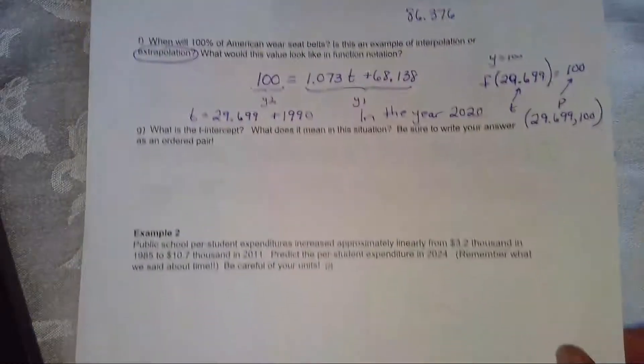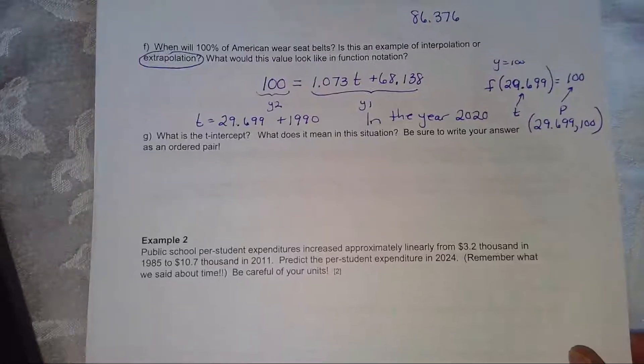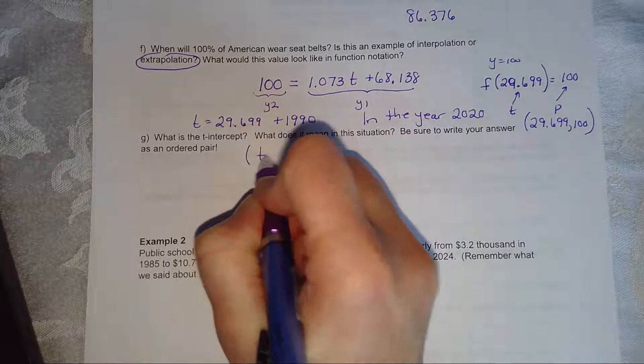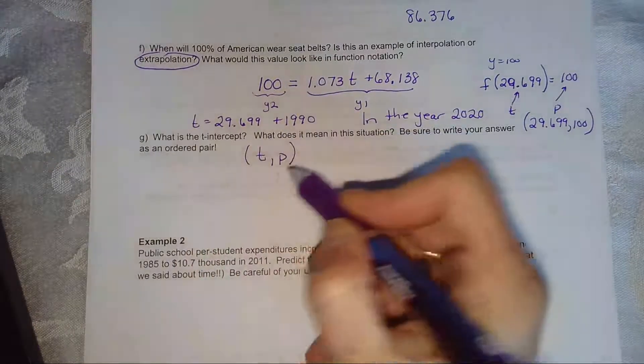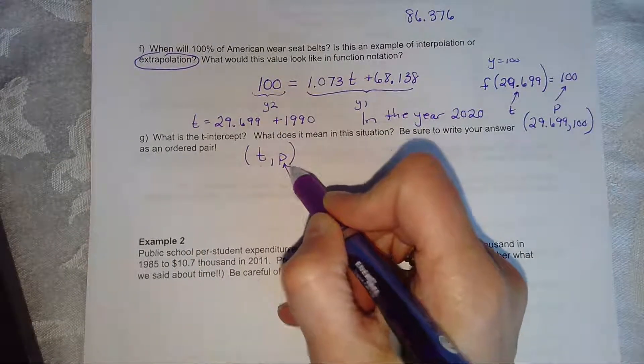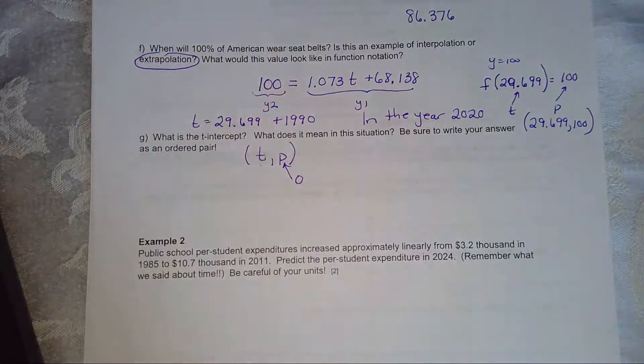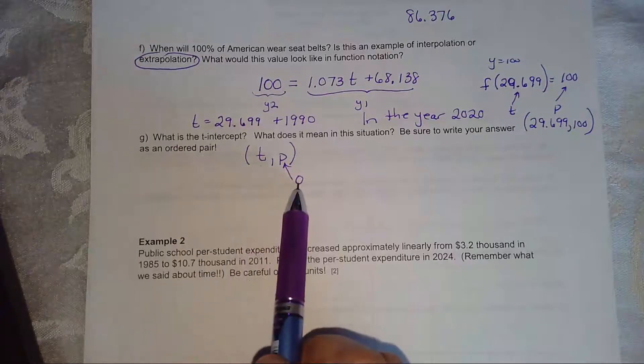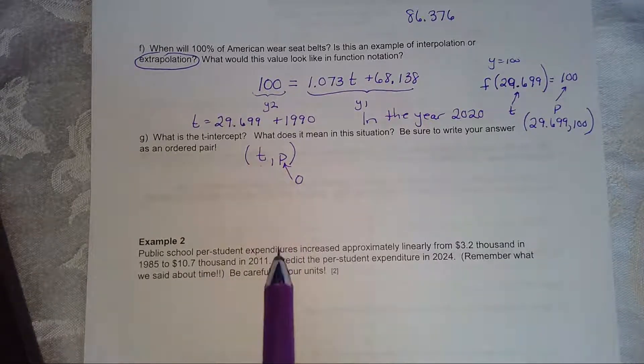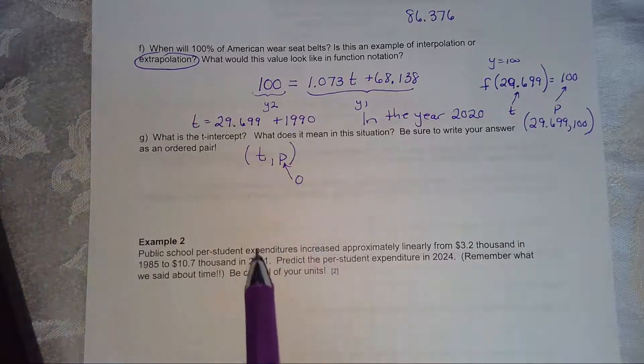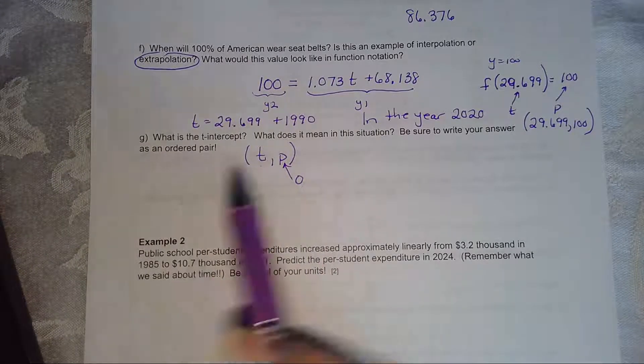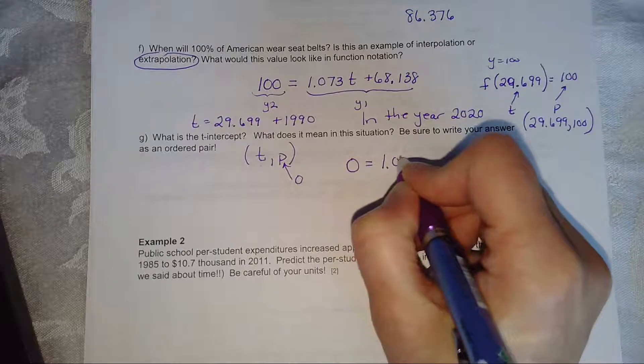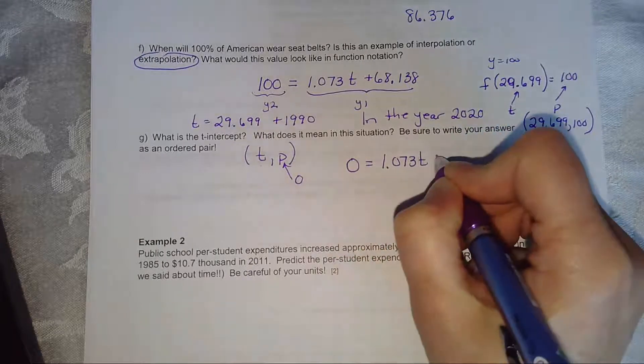Last problem. And then we'll do example two. Then we'll call the day. The t intercept. Remember, it goes t comma p. So that means we have a t, but the p is zero. And this is extrapolation, to find a percent where no Americans wore seat belts. This is going to be a very early year, according to this model. So again, we'll calculate this one out by hand. But you could use the table key if you wanted.